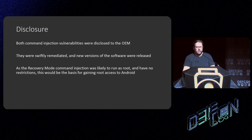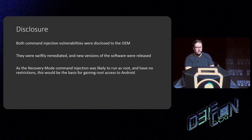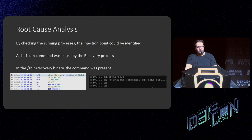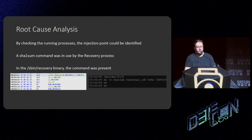I disclosed all the command injection vulnerabilities to the OEM, who very swiftly remediated them and updated the software. But as the recovery mode command injection was very likely running as root with no SELinux restrictions, this would be a good basis for gaining further root access. Root cause analysis found it was a SHA1 sum check for logging — checking the SHA1 sum of the update file — which was then executing the backticks because they were doing `sprintf` into an `exec` command. Very basic.